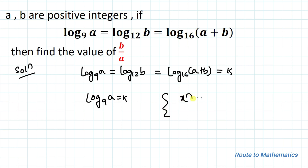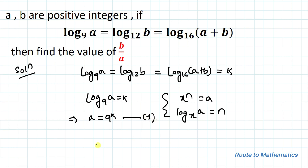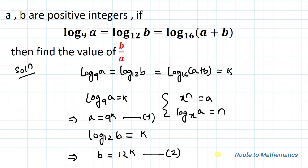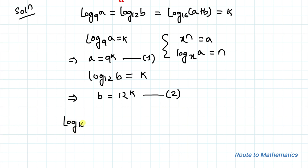We know the logarithm law: x to the power n equals a means log base x of a equals n. Applying this rule, log base 9 of a equals k gives us a equals 9 to the power k — let this be equation 1. Similarly, log base 12 of b equals k gives b equals 12 to the power k — equation 2. And log base 16 of (a + b) equals k gives a + b equals 16 to the power k — equation 3.